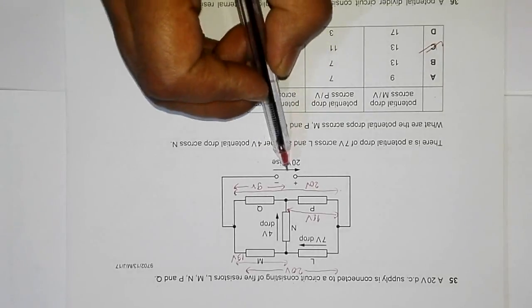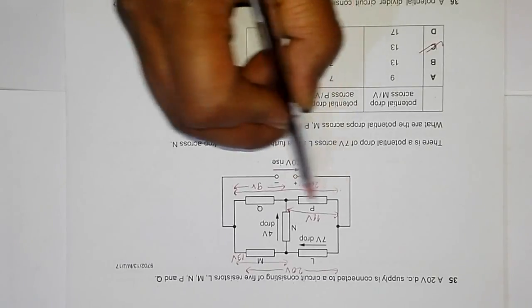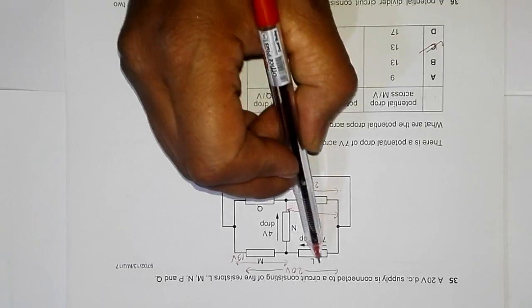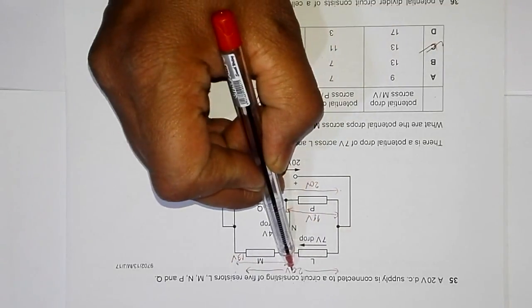Let us realize that since this is 20 volt, the PD across this point to this point should be 20 volt, and also the potential difference across this point and this point, or even this point, should be 20 volt.